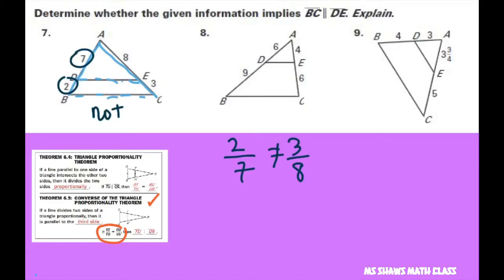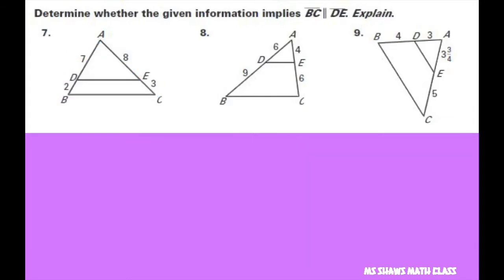So let's try number 8. Let's do the same thing. We can go up or down but let's go 6 is to 9 as 4 is to 6. If we reduce both of these we get 2 thirds equals 2 thirds. Since they are proportional, it means BC is parallel to DE.